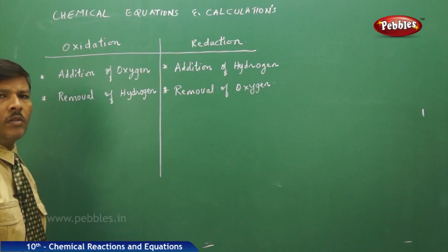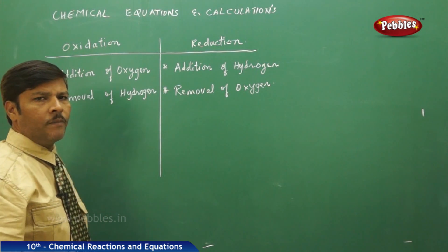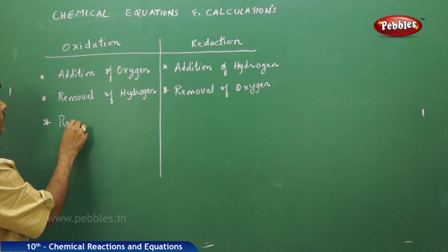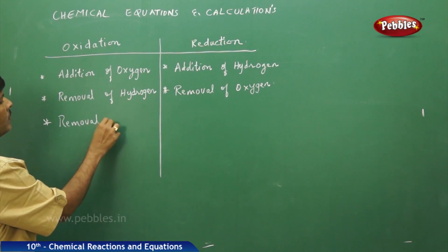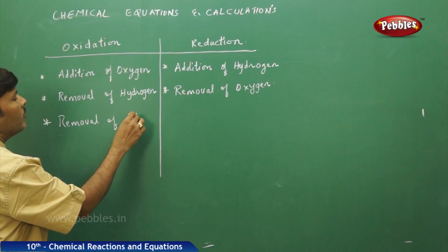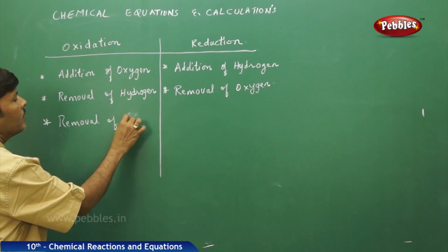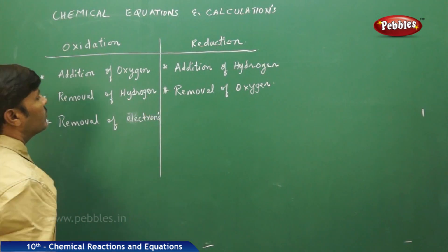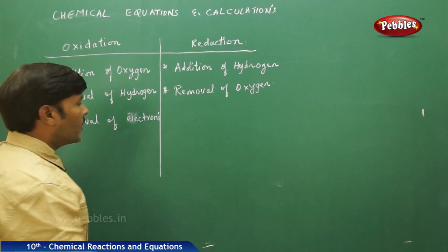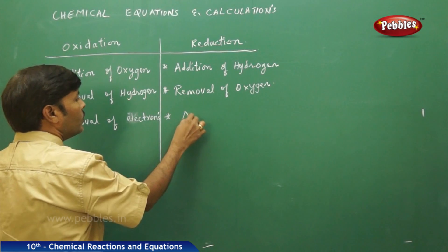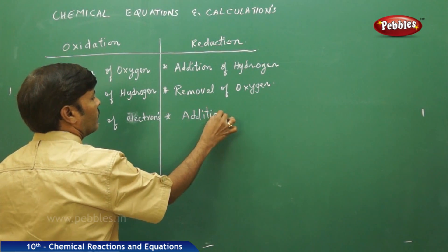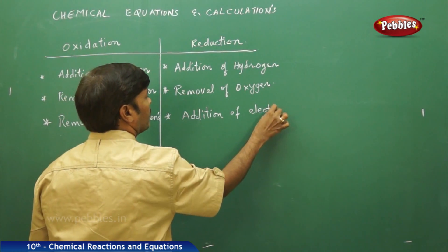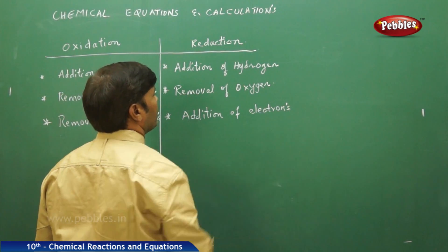We can also term oxidation and reduction in simple terms as: removal of electrons is also oxidation, and addition of electrons is reduction.